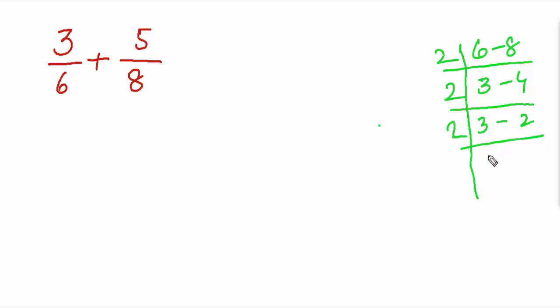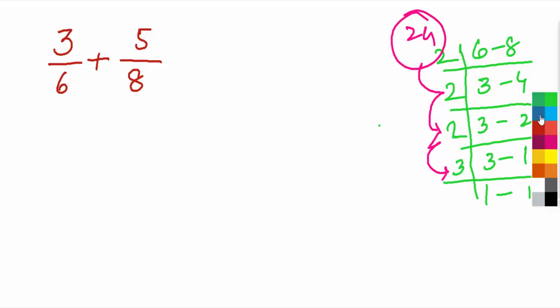2 into 3 as it is, 2 into 1, now 3 into 1, and 1. Now just simplify: 2 times 2 is 4, 4 times 2 is 8, and 8 times 3 is 24. So clearly 24 is the LCM. Here there are